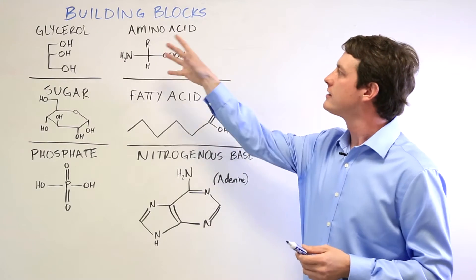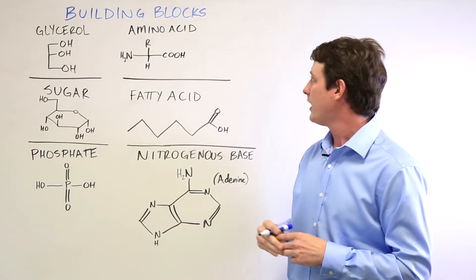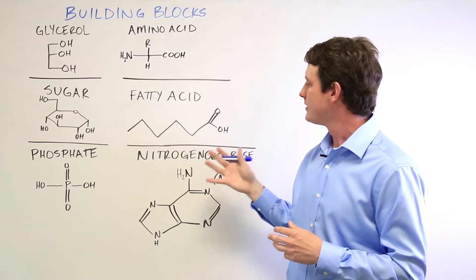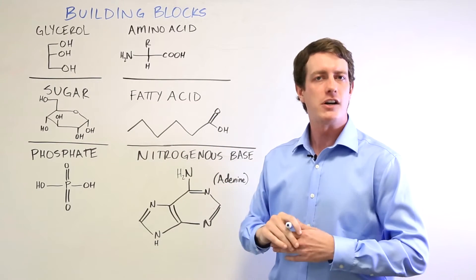So what we have here are the various building blocks of life. We have glycerol, amino acids, sugars, fatty acids, nitrogenous bases, and phosphate groups.